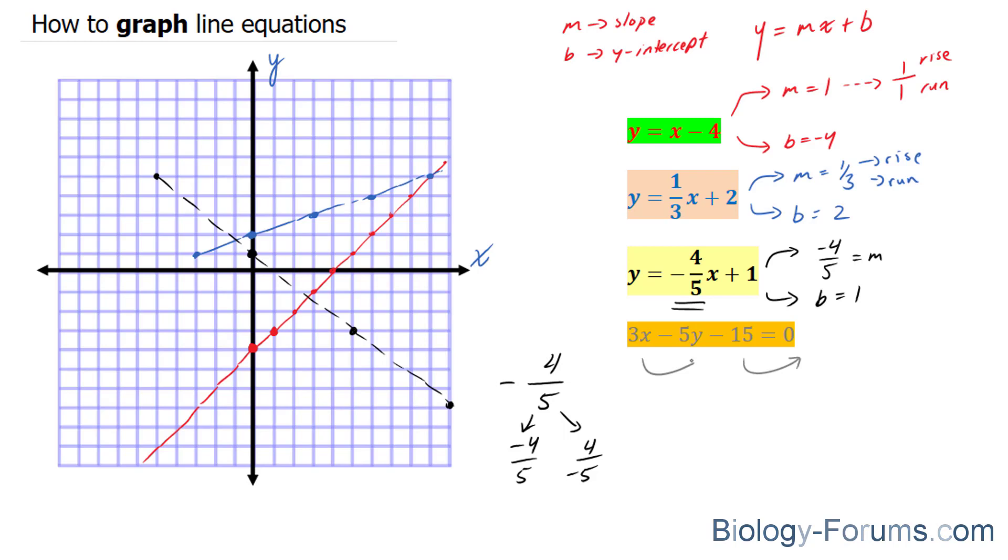You'll bring the 15 over, you'll bring the 3x over, and you end up with negative 5y equals negative 3x plus 15. Now, we divide both sides by negative 5, and we end up with y equals 3 over 5x minus 3. Excellent.